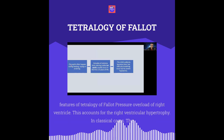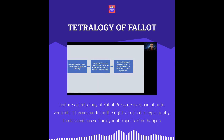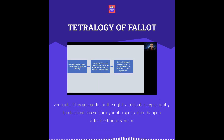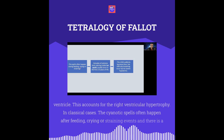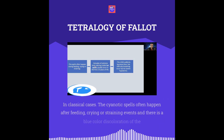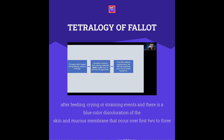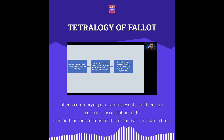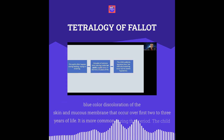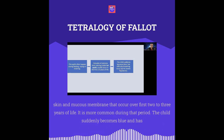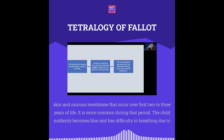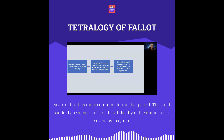In classical cases, cyanotic spells often happen after feedings, crying, or straining events. There is blue discoloration of the skin and mucous membranes that occurs over the first two to three years of life — it is more common during that period. The child suddenly becomes blue and has difficulty breathing due to severe hypoxemia.